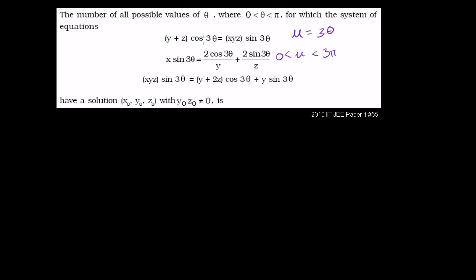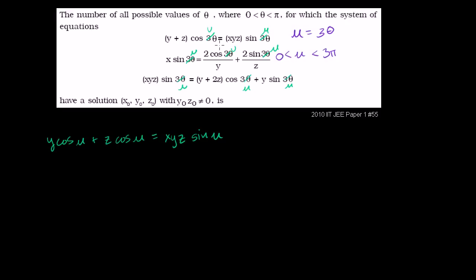With that substitution, I'm going to rearrange these equations so they look a little more familiar and see if we can start manipulating and canceling out terms. For this first equation, let me distribute the cosine of u. Replacing 3 theta with u throughout, we get y cosine of u plus z cosine of u equals xyz sine of u. That's the first equation.